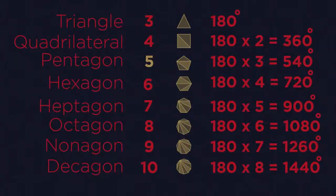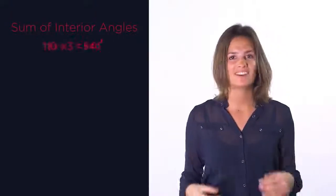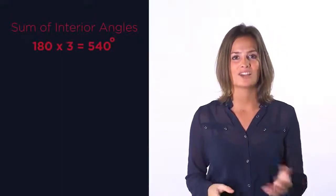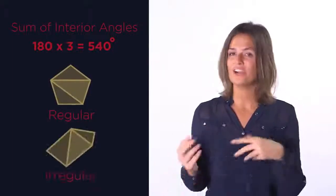So 5 sides times 3, 6 sides times 4. We've just seen that we can easily work out the sum of interior angles for any type of polygon. It can be regular or irregular.